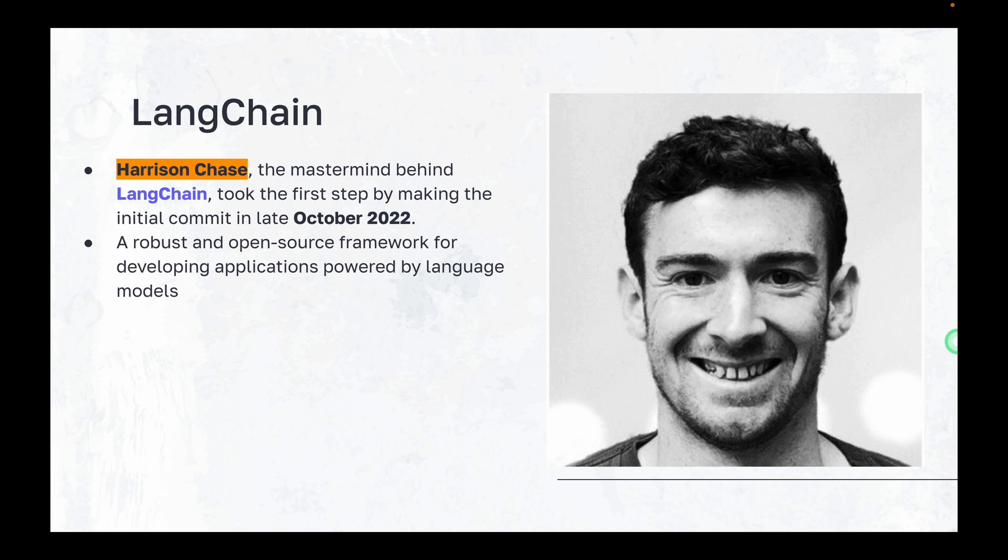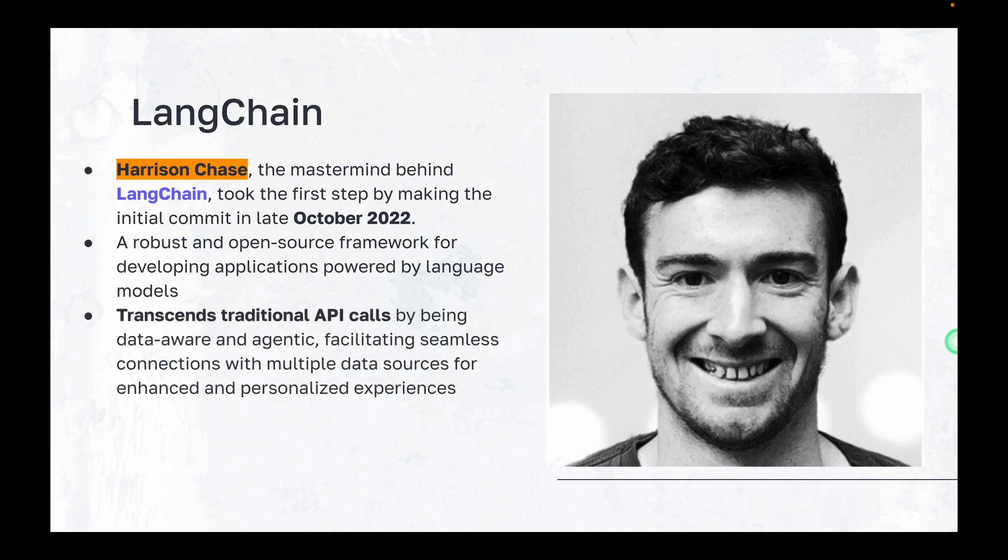LangChain is a robust and free framework that aids in creating applications fueled by language models, specifically LLMs. LangChain revolutionizes application development with its two unique features. The first feature is LangChain goes above and beyond typical API calls. It has the ability to understand and utilize data effectively, allowing seamless connections with diverse data sources to create more personalized and immersive experiences.